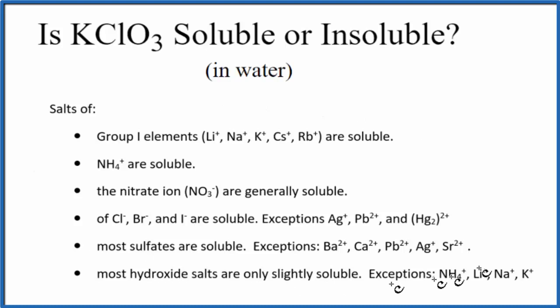First, we could have memorized the solubility rules. So this is a brief set of the solubility rules. And the first rule, group 1 elements. Potassium, that's in group 1 on the periodic table. They're soluble. So compounds with group 1 elements, like potassium chlorate, are soluble in water.